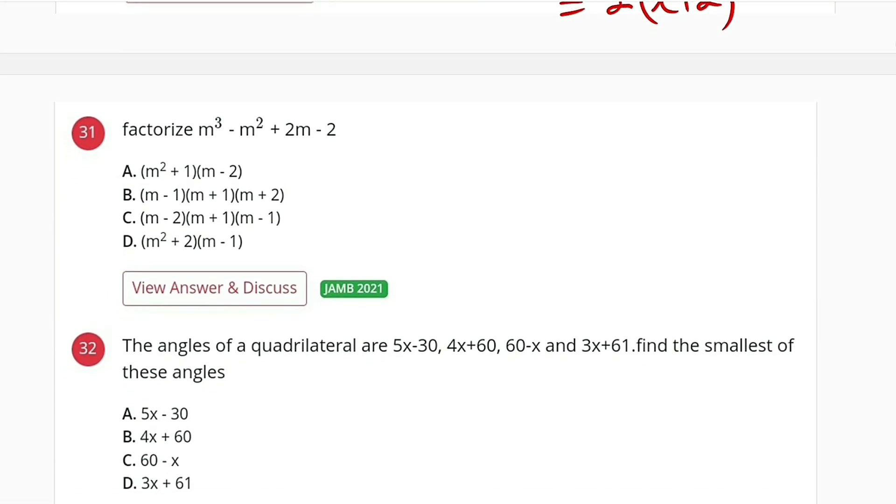Question number 31: we are asked to factorize m³ - m² + 2m - 2.